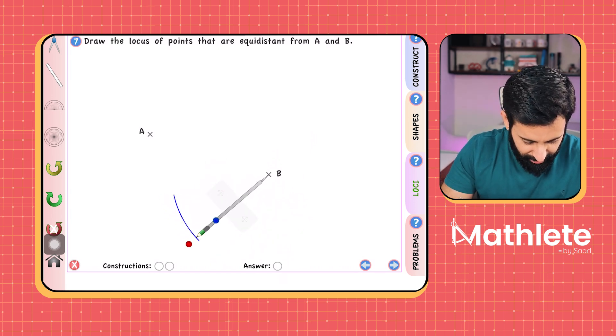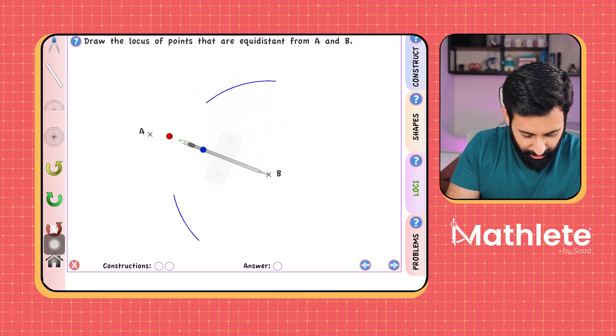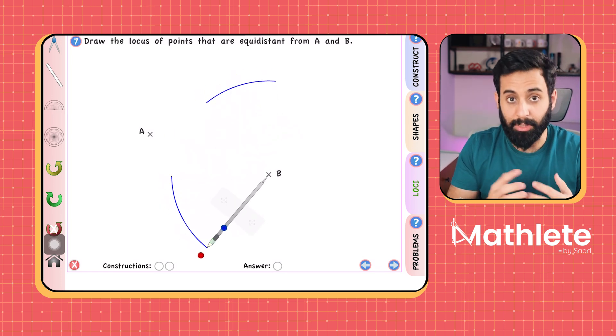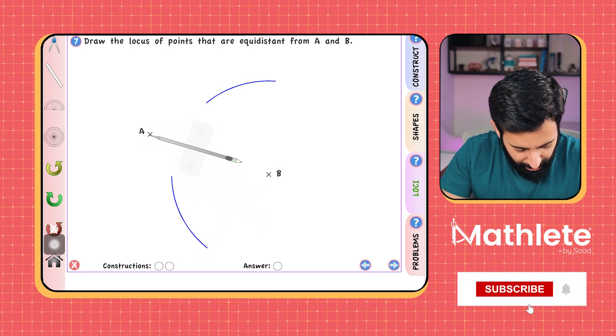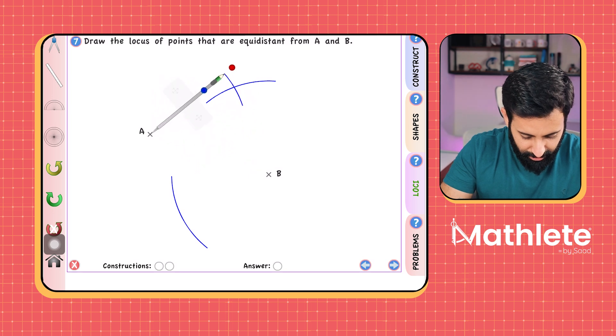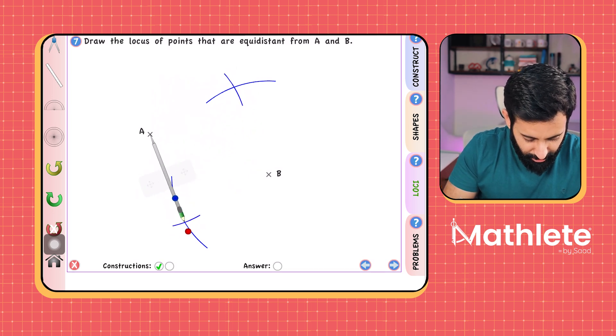So one on this side, one on the other side, just be generous with your arcs, don't make very small arcs. Otherwise, they won't intersect. Then without changing the length of your compass, place it on the opposite side, make an arc on this side, make another arc on the opposite side.